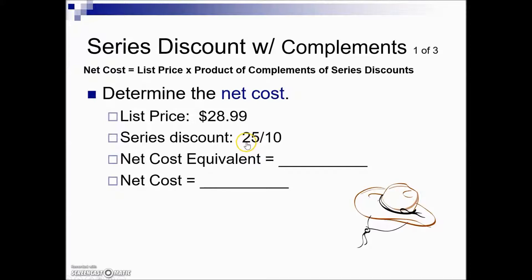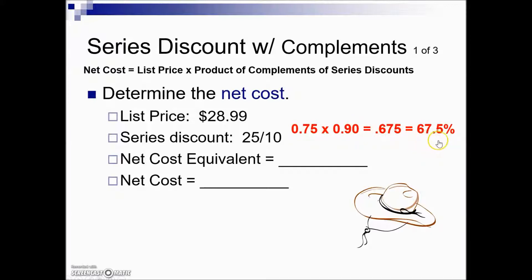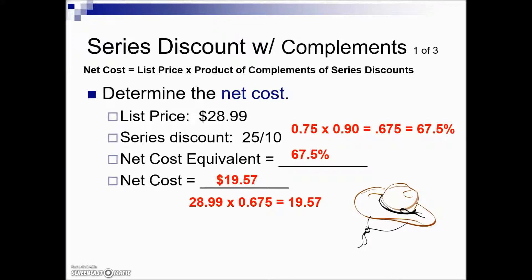In this example, we have a series discount of 25% and an additional 10%. We'll take the complement of 25%: 100 minus 25 is 75. Then multiply it by the complement of 10%: if you're saving 10%, you're paying 90%, found by taking 100 minus 10. Multiplying those together gives us the complement of this series discount — the net cost equivalent rate of 67.5%. We then use that rate times our base or list price to find the net cost.